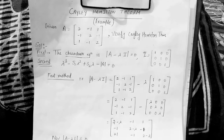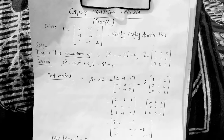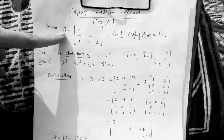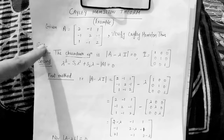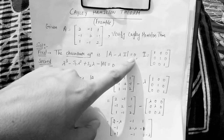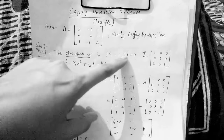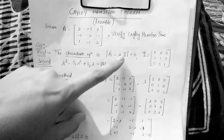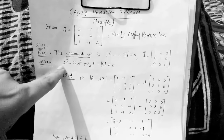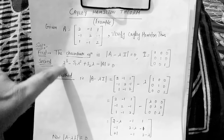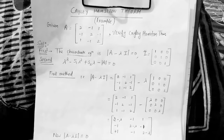Hello students, today I'm going to teach you the Cayley-Hamilton theorem, which is based on matrices. To verify this theorem using a given matrix A, we have to find the characteristic equation. There are two methods to find the characteristic equation. The first method is |A - λI| = 0. This is the standard method, but it is very long and sometimes confusing. The second method is a shorter method.